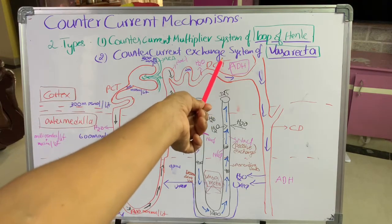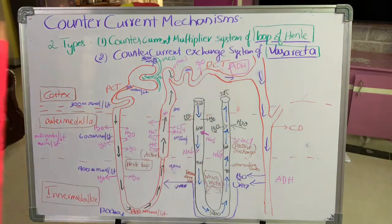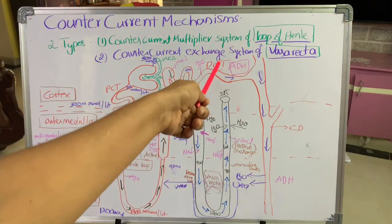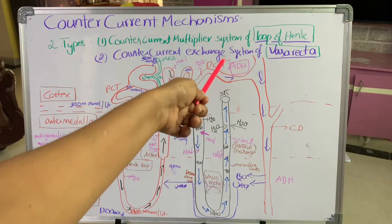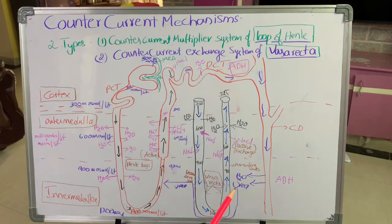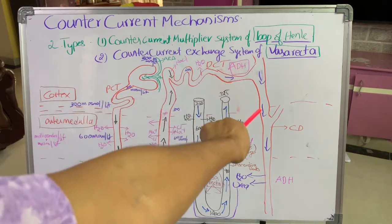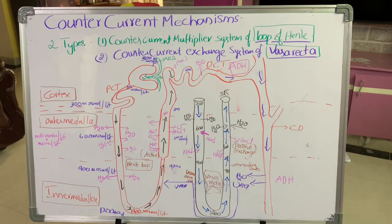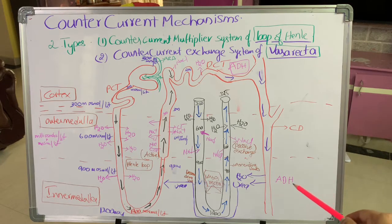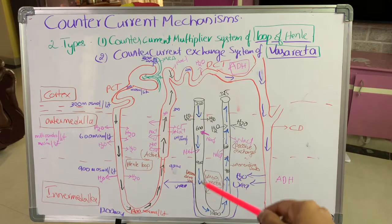The DCT is also under the control of ADH, or antidiuretic hormone. This hormone enhances the uptake of water molecules and sodium chloride. From the distal convoluted tubule, the filtrate enters the collecting duct. The medullary collecting duct is also under the influence of ADH, which is secreted by the pituitary gland. Water from the medullary collecting duct enters the interstitial fluid, and urea also enters the interstitial fluid. This urea again enters into the thin segment of the ascending limb.